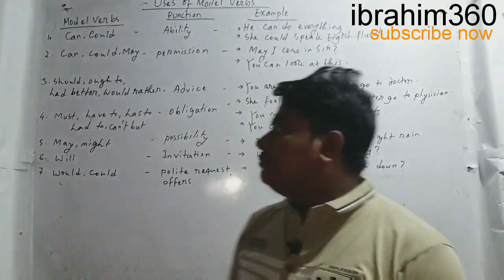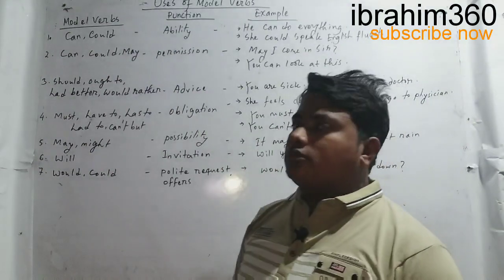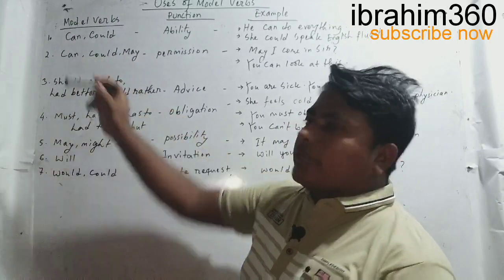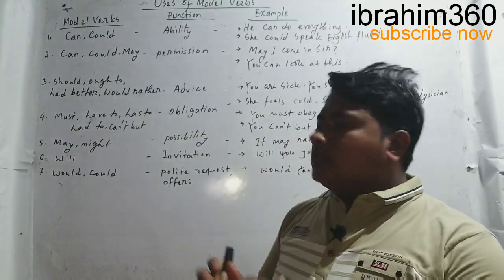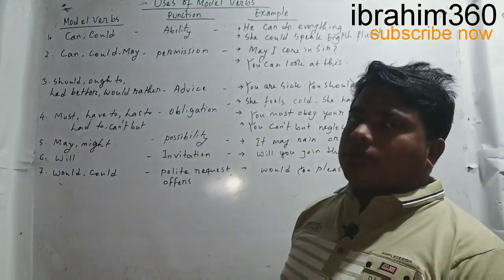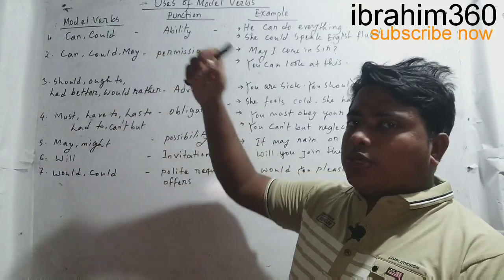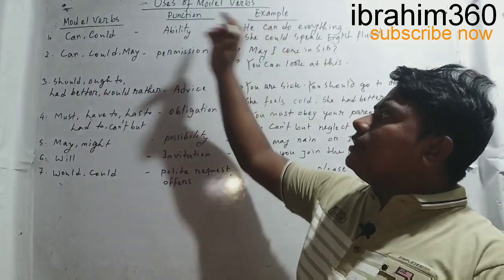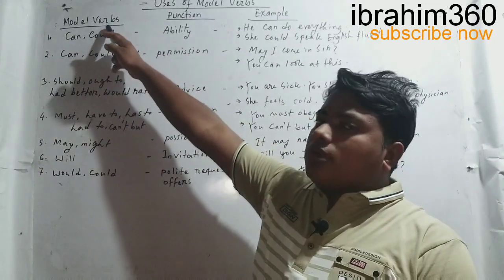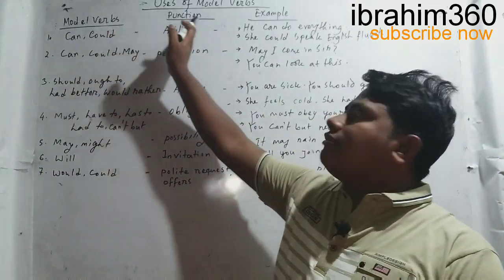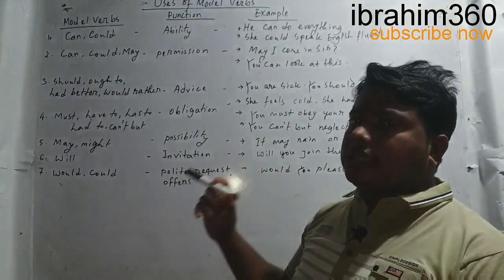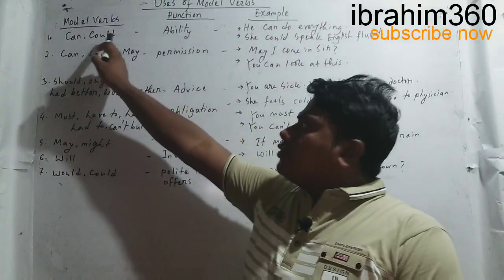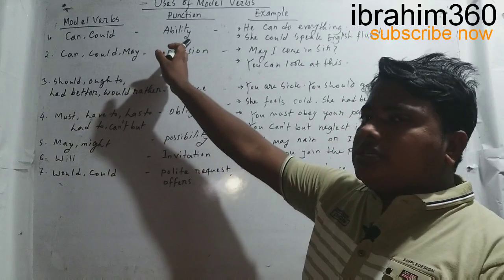In English grammar, the modal auxiliary includes can and could. I am going to cover three categories: the modal auxiliary verb, its function, and examples. Can and could express ability. For example, she could speak English fluently.